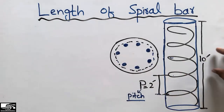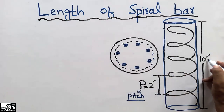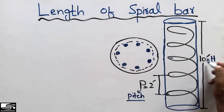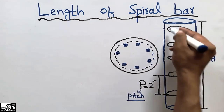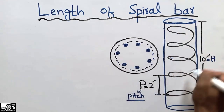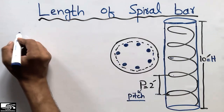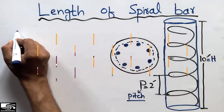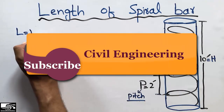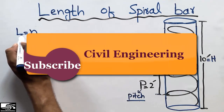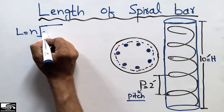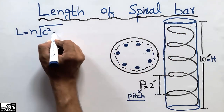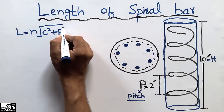The total depth of the column is ten feet. To find the length of this spiral, we use this formula: the length of the spiral L is equal to n times the square root of C squared plus P squared.